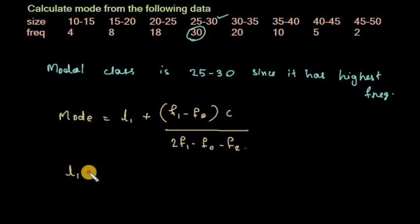L₁ is the lower limit of the modal class, so L₁ = 25. F₁ equals 30. F₀ is the frequency of the preceding class.